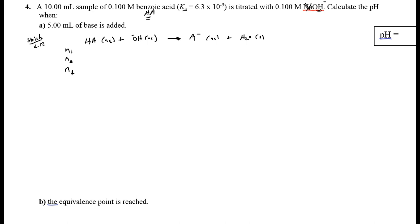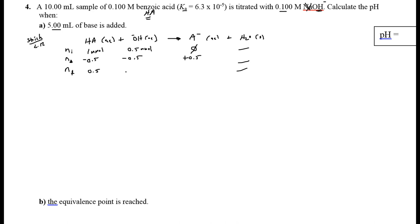With 0.5 millimoles of hydroxide as the limiting reagent and 1:1:1 stoichiometry, the base runs out. HA decreases by 0.5 to give 0.5 millimoles remaining. A− increases by 0.5 to give 0.5 millimoles. The strong base is completely consumed. We now have equal amounts of weak acid and conjugate base — a 1:1 buffer.